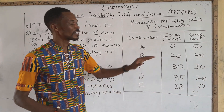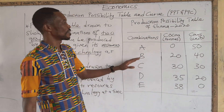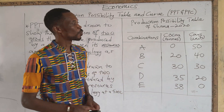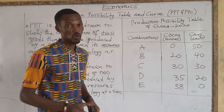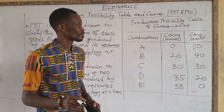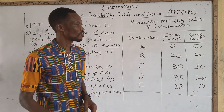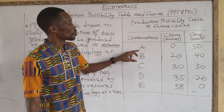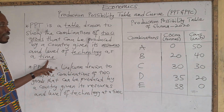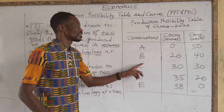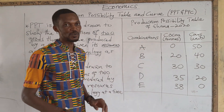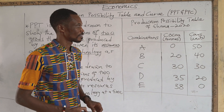What about choice B? If the country chooses to produce at B, the country will have 20 tons of cocoa and 40 units of cars. Note that the country cannot produce combination A and B at the same time — it's not possible. Remember, I mentioned the time factor. At the same time, you can't have production of A and B. You can only have one at a time. Take note of this — it is very important.